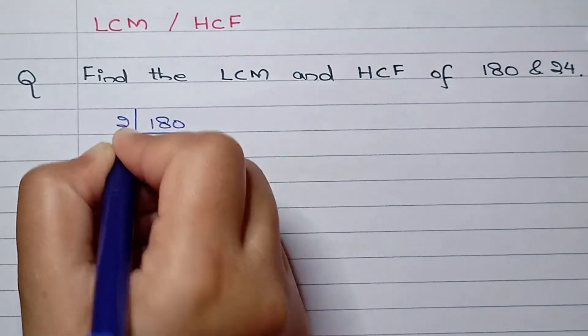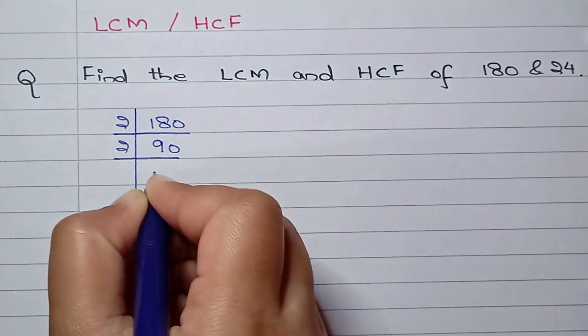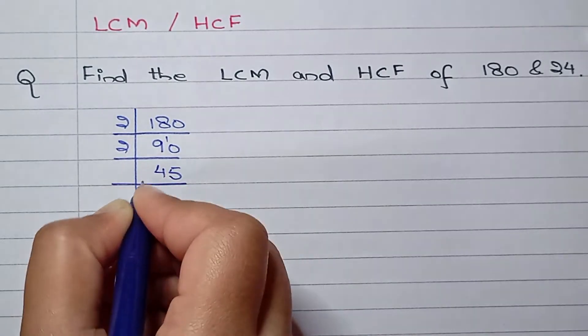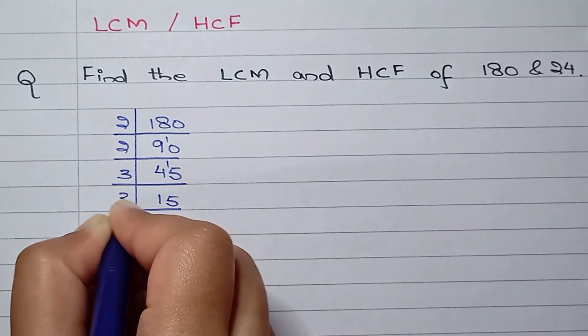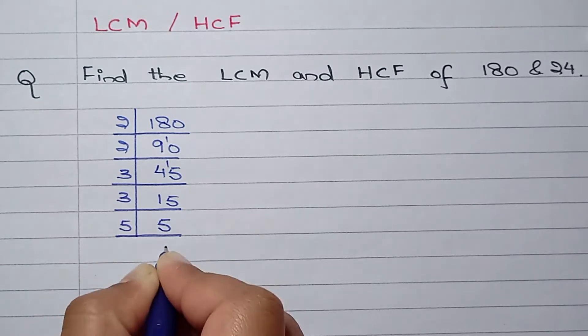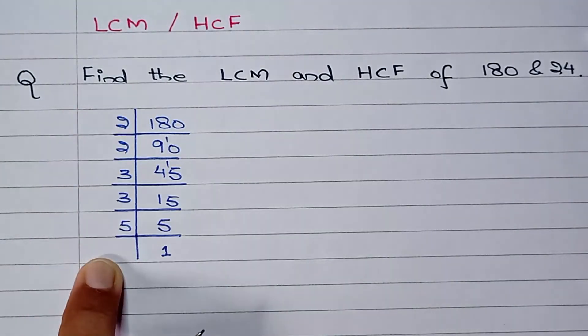180 divides by 2. 2 times 9 is 18 and 0, 2 times 4 is 8 and 2 times 5 is 10. 3 times 1 is 3, 3 times 5 is 15, 3 times 5 is 15, and then 5 times 1 is 5. So these are the prime factors for 180.